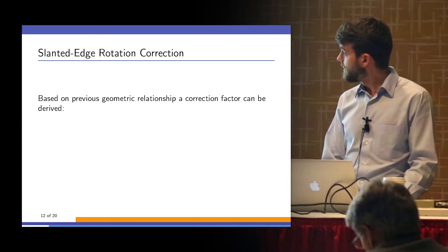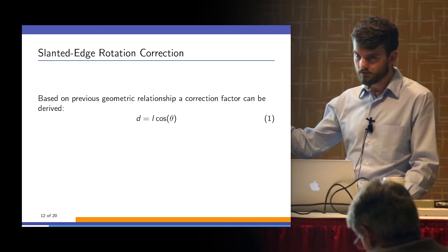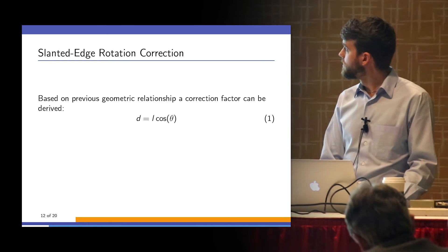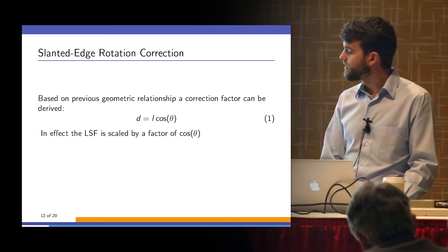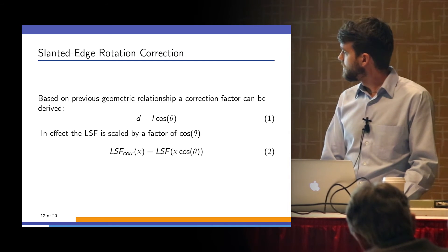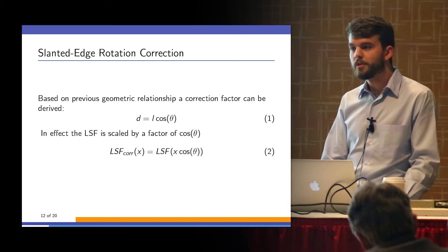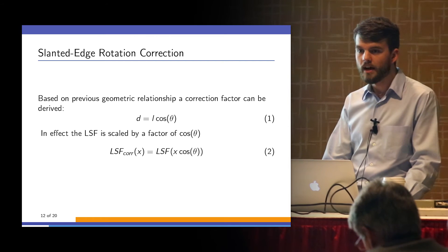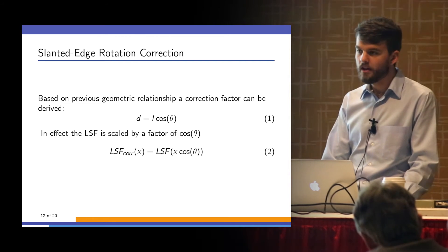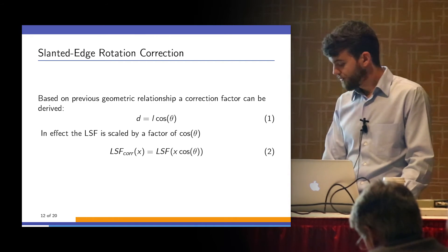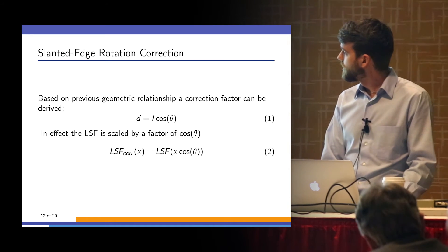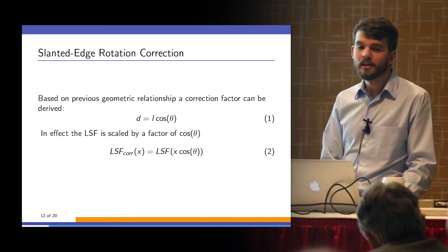The simple trigonometric relationship here can simply be reapplied to the line spread function, so that you scale the line spread function according to that correction factor. For reference, a number of people already do this.